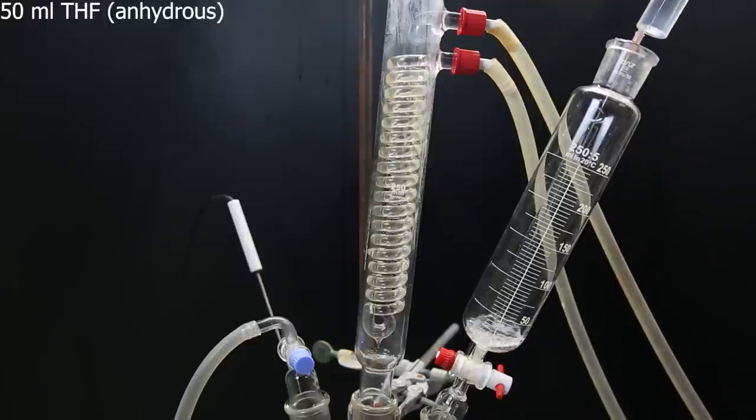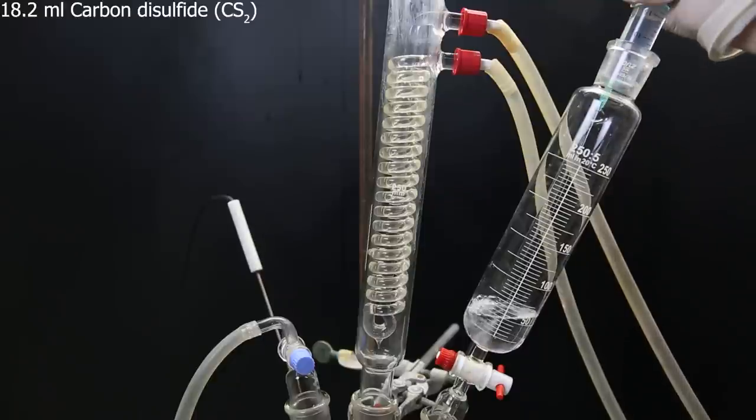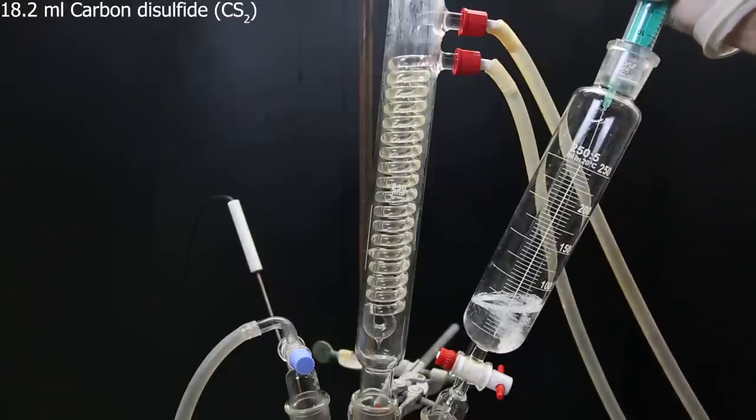When that is done, I start the nitrogen flow again, and open the dropping funnel. I add 50ml of anhydrous THF, and then dissolve 18.2ml of carbon disulfide into it.